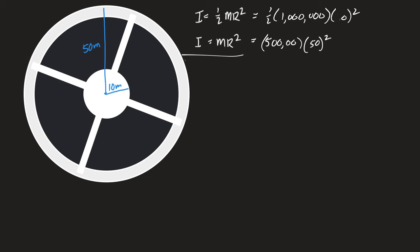The inner radius is 10 meters, not 50, so I think this is your sum. We're not including the people in this, but that's okay. When we just add these two together it's going to be some huge number.